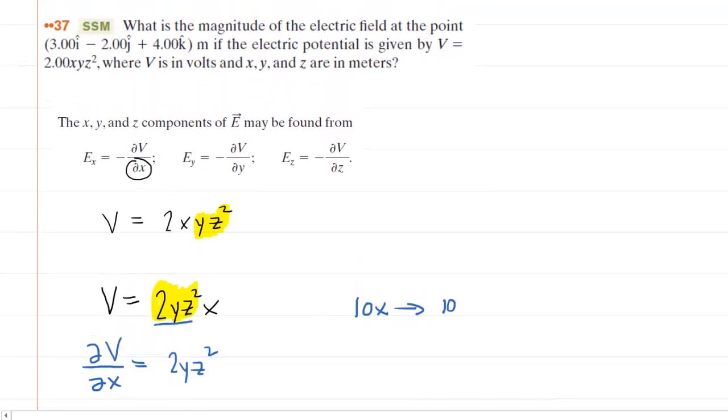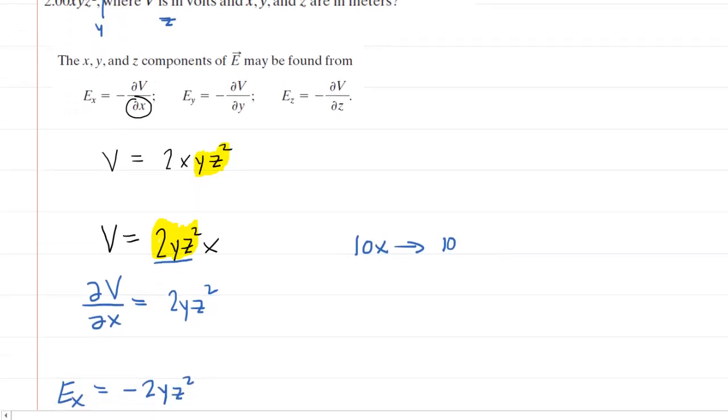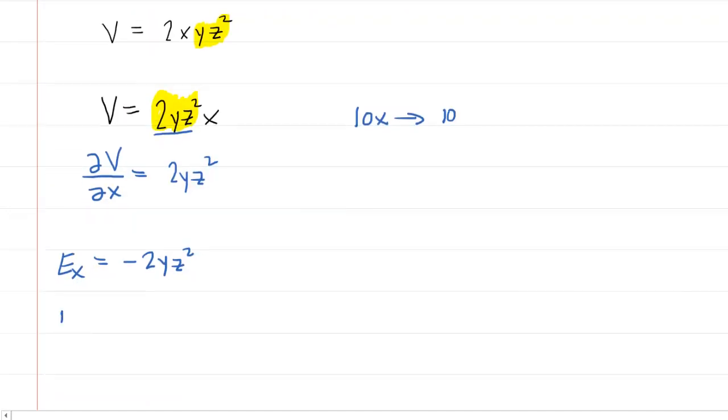So this coordinate right here is the x coordinate. This negative 2 is the y coordinate and the positive 4 is the z coordinate. So we're going to need to plug in the y and z coordinate, negative 2 and 4 into our equation here.